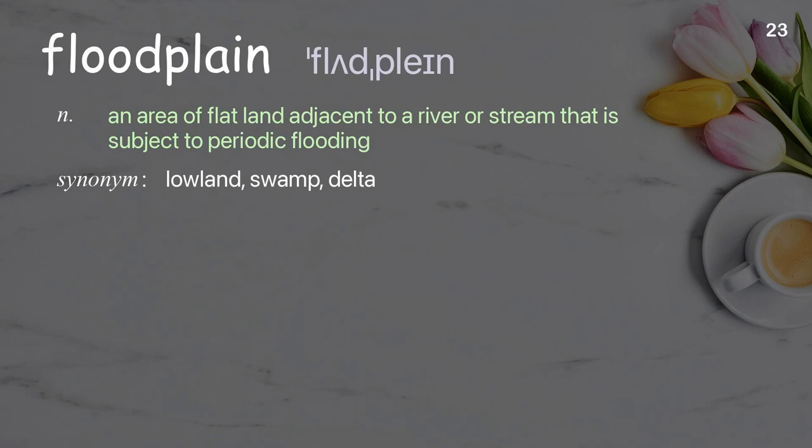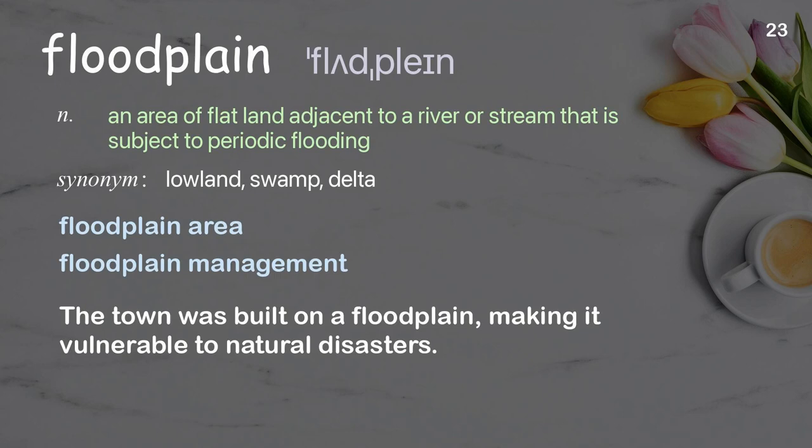Floodplain: an area of flatland adjacent to a river or stream that is subject to periodic flooding. Examples: floodplain area, floodplain management. The town was built on a floodplain, making it vulnerable to natural disasters.